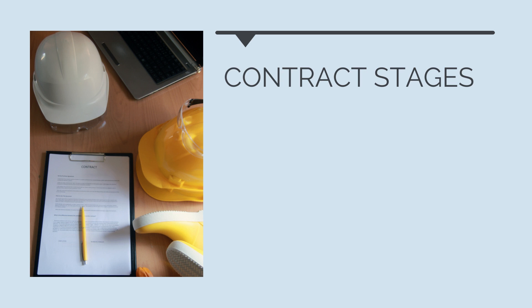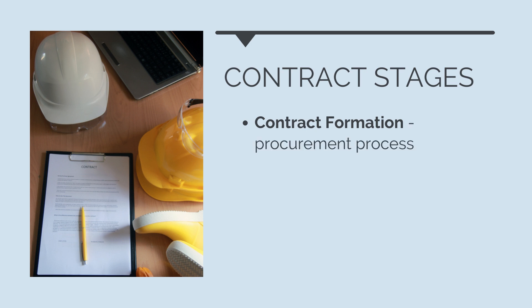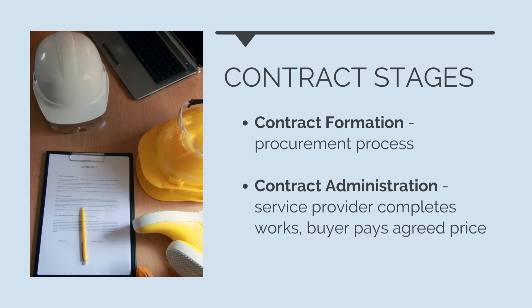There are really two key stages in contract management. The first is the contract formation stage, where the contract between two parties is formed. In construction management, this is the procurement process where a client or project developer finds and selects a head contractor, or the head contractor finds and selects subcontractors. There are certain minimum requirements that need to be in place for a contract to exist. Next comes the contract administration stage, where the service provider or seller organisation completes the contracted works and the buyer organisation pays the agreed upon price for it.